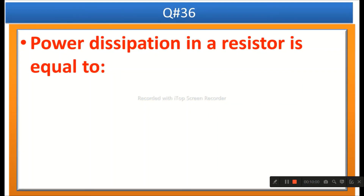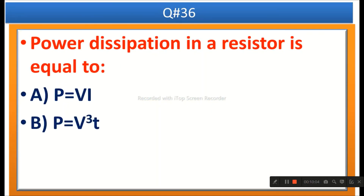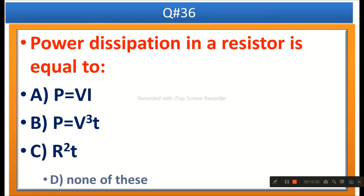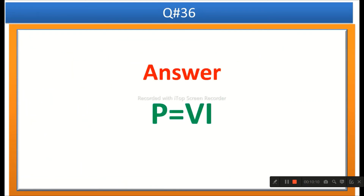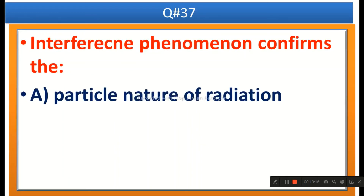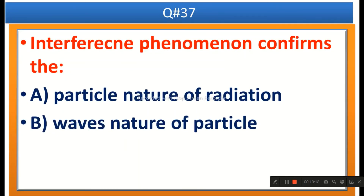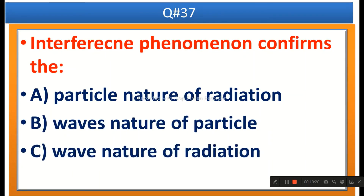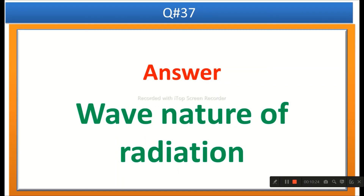The next question: Power dissipation in a resistor is equal to — P equals V, V cubed T, or none of these. The right answer is P equals VI. The next question: Interference phenomena confirms — options are the particle nature of radiation, wave nature of particle, or wave nature of radiation. The right answer is wave nature of radiation.